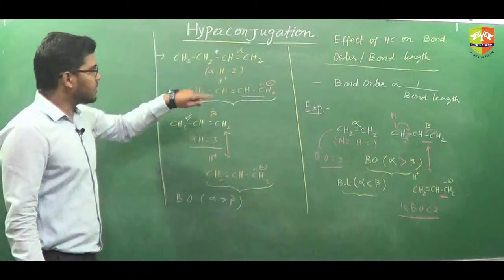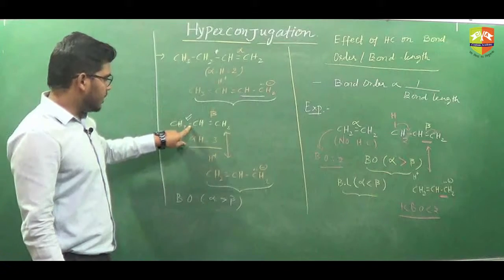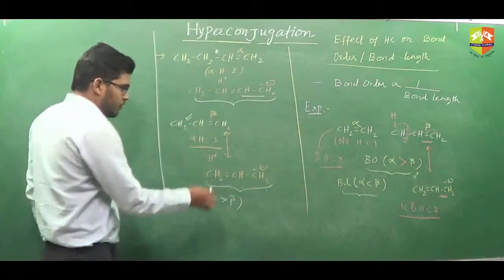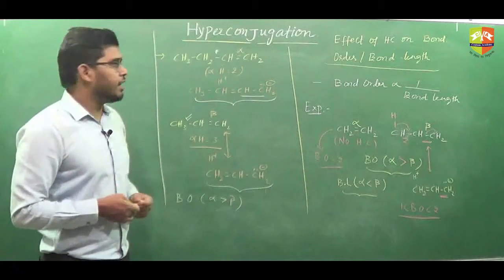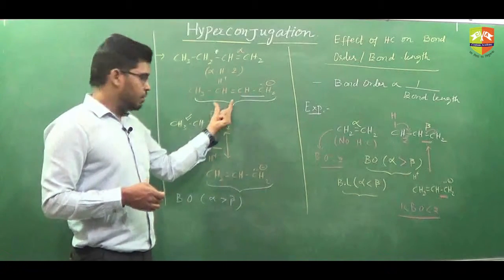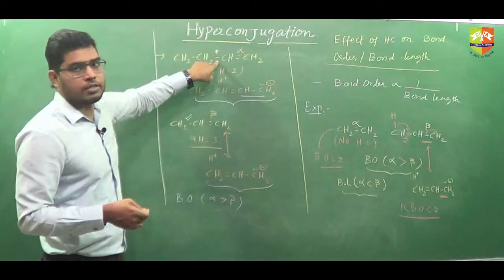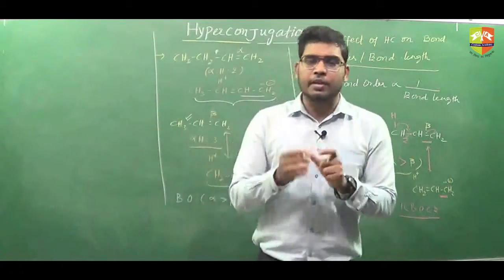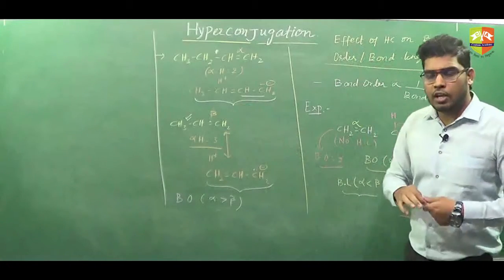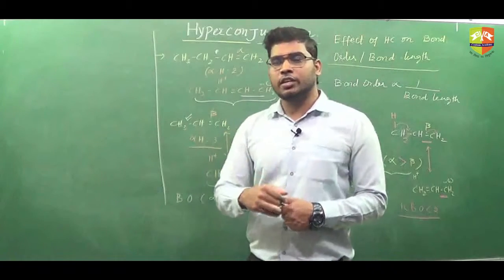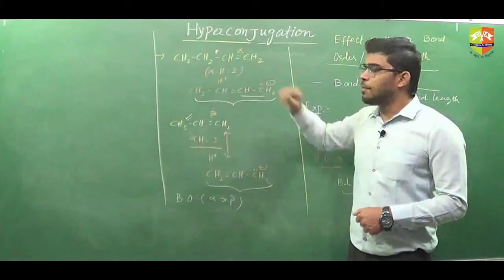Due to hyperconjugation, this sigma bond is converting into pi — single bond is converting into double bond — so bond order is increasing. Here also the single bond is converting into double bond, bond order is increasing. But the number of hyperconjugative structures in which we have this kind of bond is more over here in comparison to this. Here we have two such structures, but here we have three structures possible. Hence we can say the bond order of this bond is more than that of this. Bond order comparison always depends on what carbon-carbon bond you are looking at.